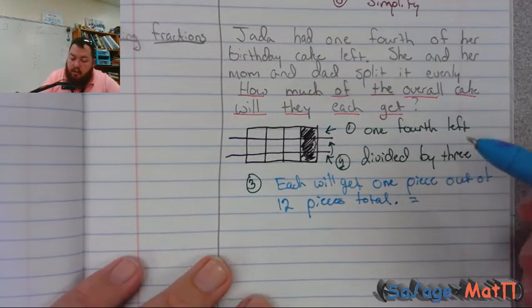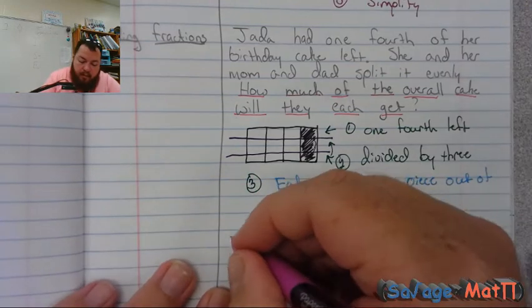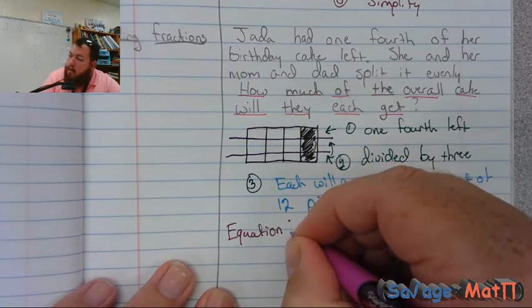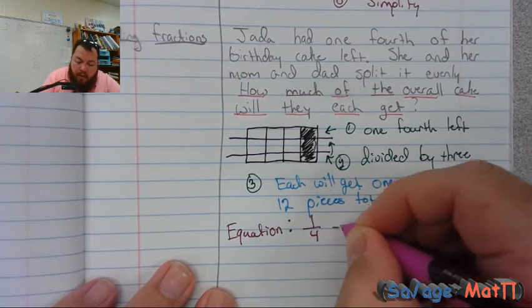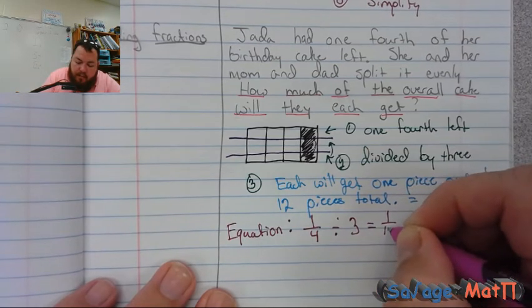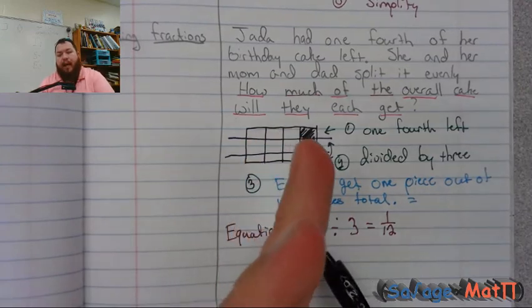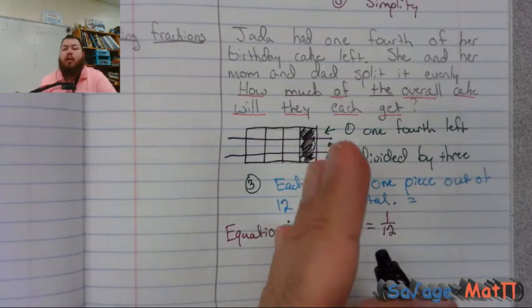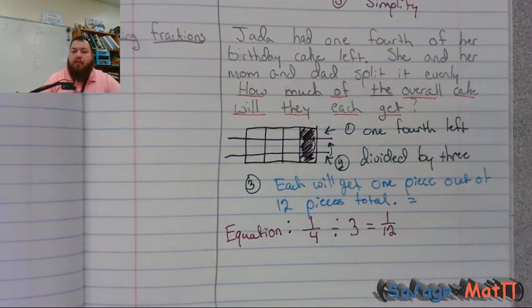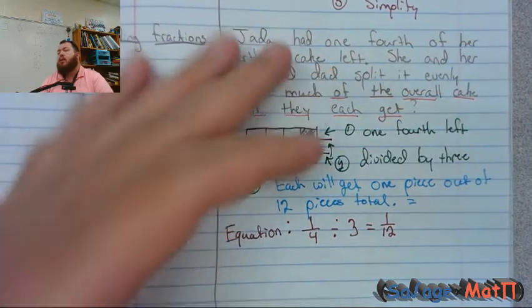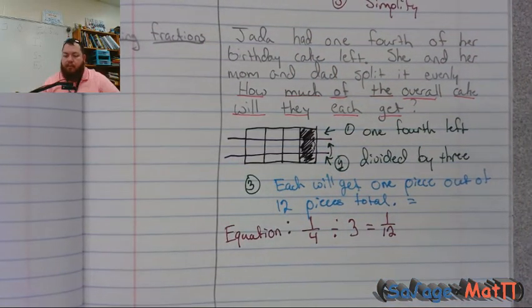Our actual equation was one-fourth divided by three equals one-twelfth. Whenever we divide a fraction by a whole number, it's always going to be smaller than the fraction we started with, because we had one-fourth and had to split it up, so it gets smaller. That was using a visual.